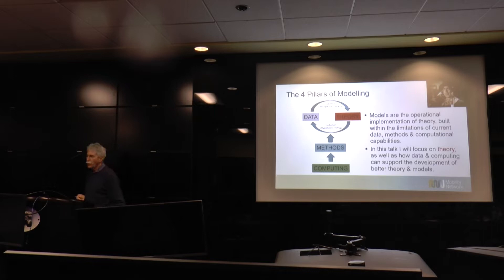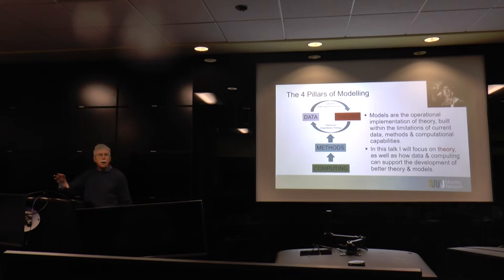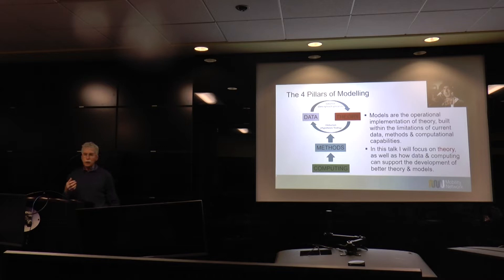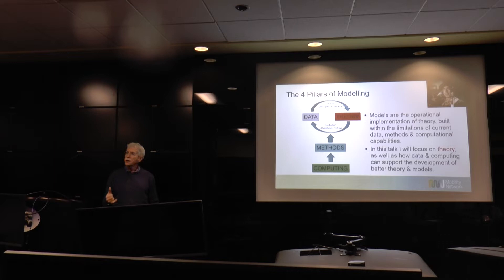Stepping back a bit, another way of viewing the problem in travel behavior and modeling is through what I call the four pillars of modeling. We have to start with theory — what is our understanding of how the system works? But theory in isolation is not enough. We have to be able to test whether the theory is correct and, hopefully, implement it in ways that are useful. To do that, we always need data — information about the real world — because that's what we're ultimately trying to model.